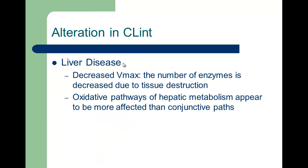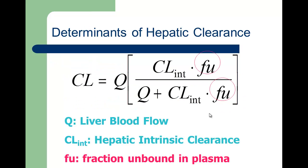What happens to intrinsic clearance in liver disease? There is a decrease in Vmax because tissue destruction reduces the number of available enzymes. Oxidative pathways appear to be more affected than conjugative pathways — the P450 system is more affected than conjugation reactions like glucuronidation or acetylation. Phase two pathways are not as affected as phase one.